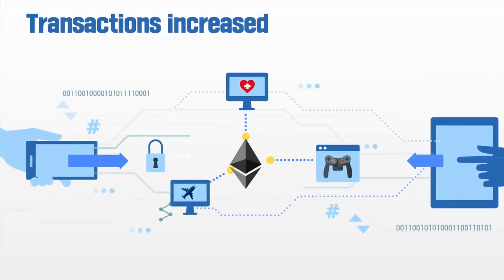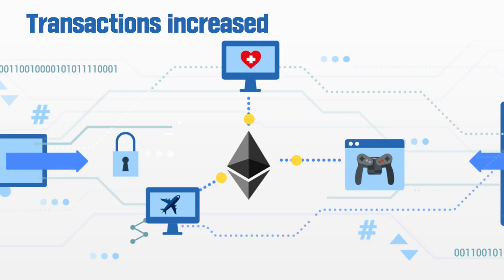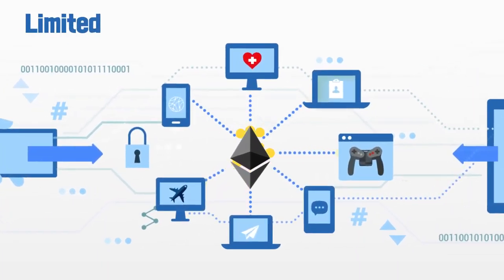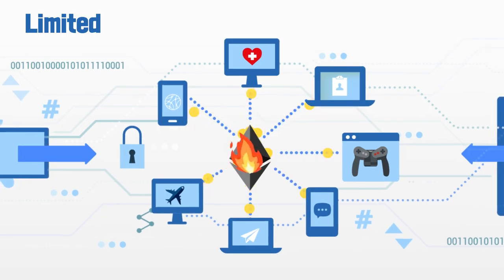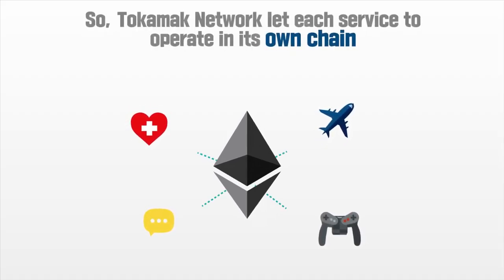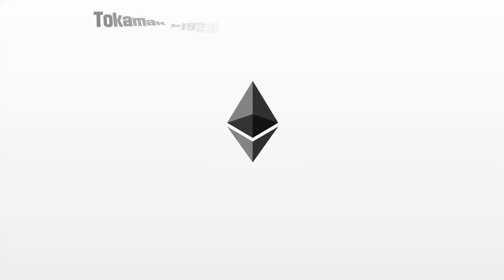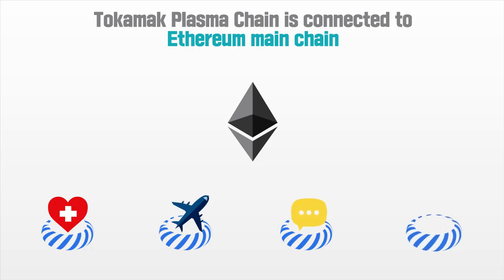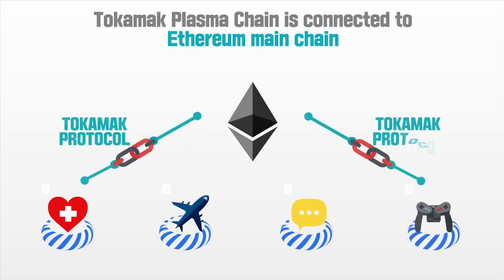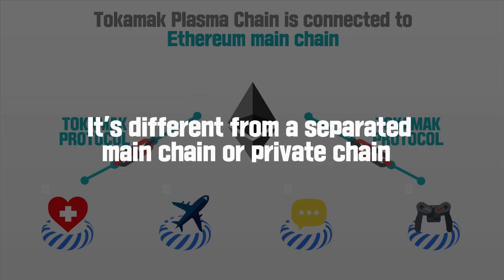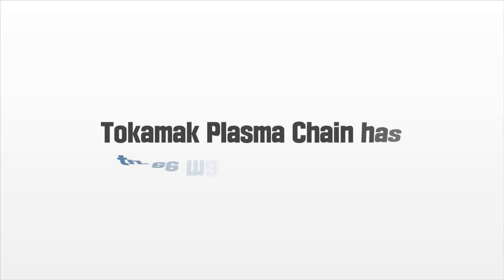As the number of decentralized applications running on a public blockchain has increased, the transactions they create are also increasing every day. However, if all of these services continue to run on one platform, even a high-performing blockchain will someday reach its limit. So Tokamak Network lets each service operate in its own chain, connected to the Ethereum main chain via the Tokamak protocol. It's different from a separated main chain or private chain.